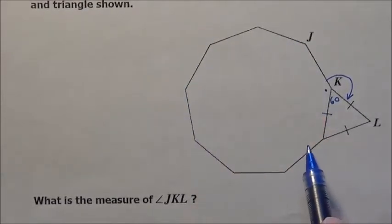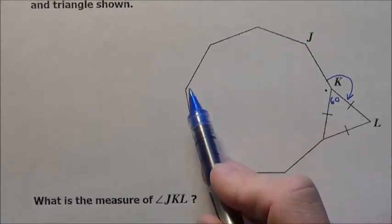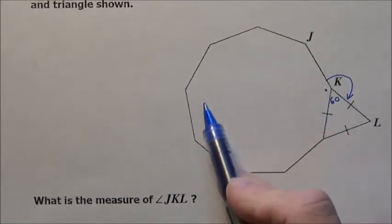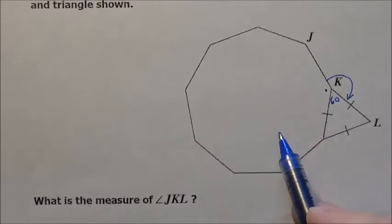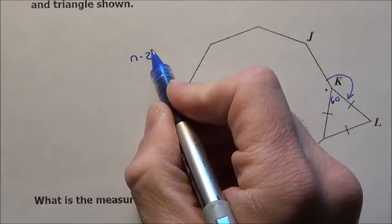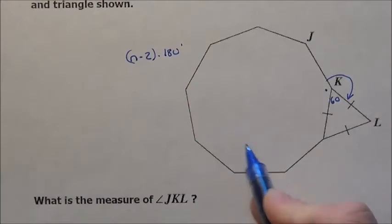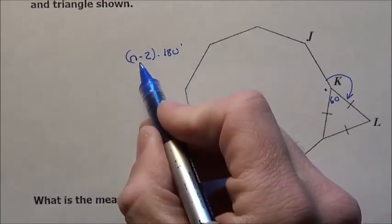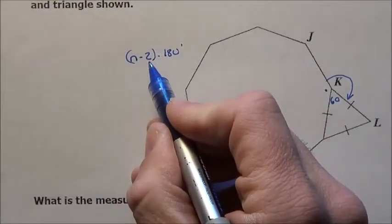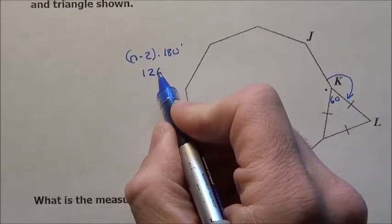We have this formula that it gives us on the sheet that tells us what the sum of all these angles inside this nonagon happen to be. If we do the formula, n minus 2 times 180, that will tell us the sum of all the angles in here. Well, if I do that, there's 9 sides, 9 minus 2 is 7, 7 times 180, I'm just going to go ahead and tell you that's 1260.